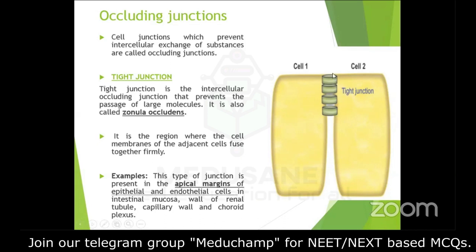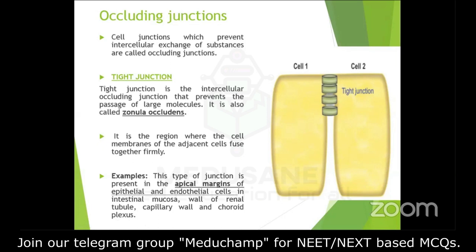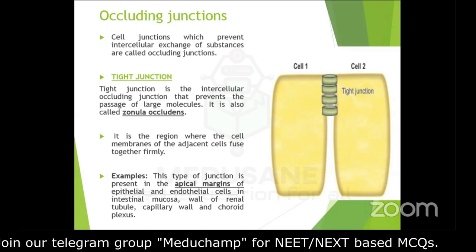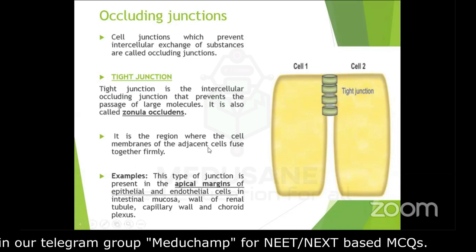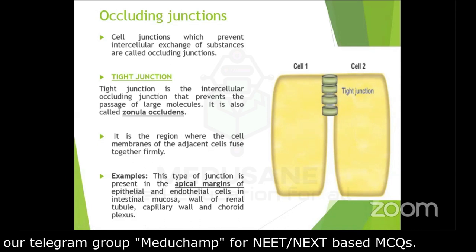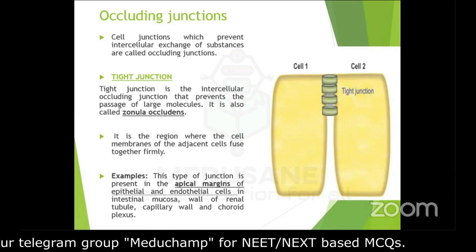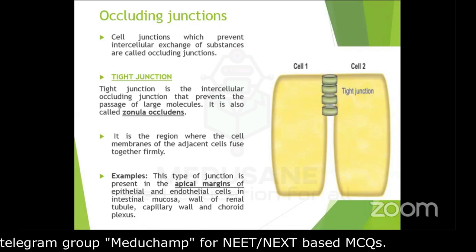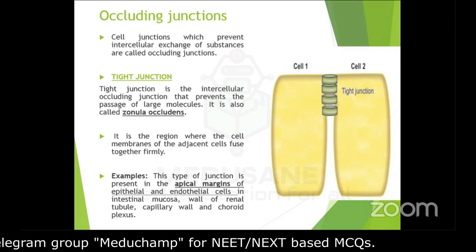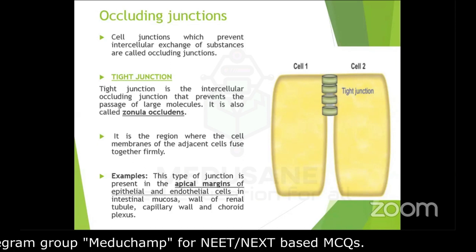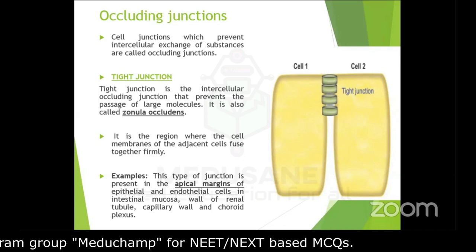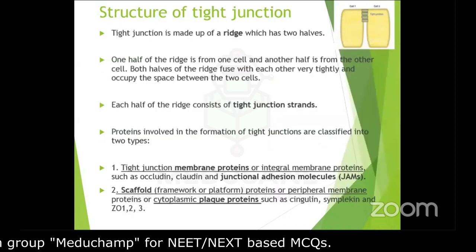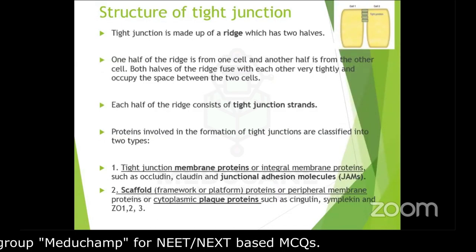The tight junction is seen here between two cells. As the name indicates, 'occluding' means closing or blocking, so it does not allow passage of large molecules. It is seen in regions where the cell membrane of adjacent cells fuse firmly together, most often at the apical margins of epithelial and endothelial cells of the intestinal mucosa, walls of the renal tubule, capillary wall, and choroid plexus.